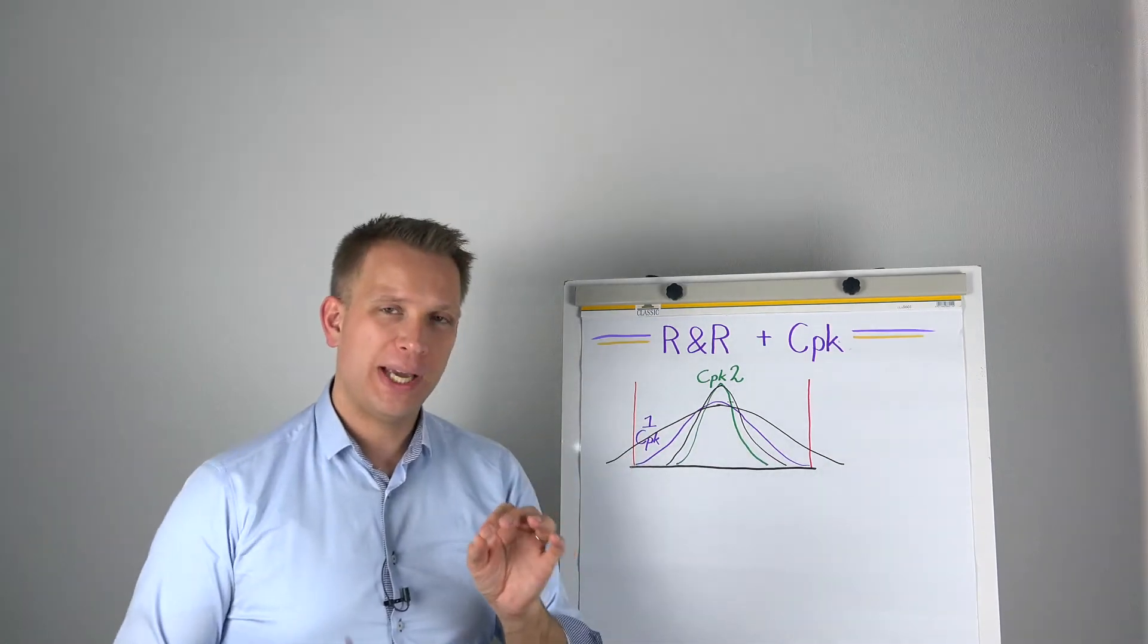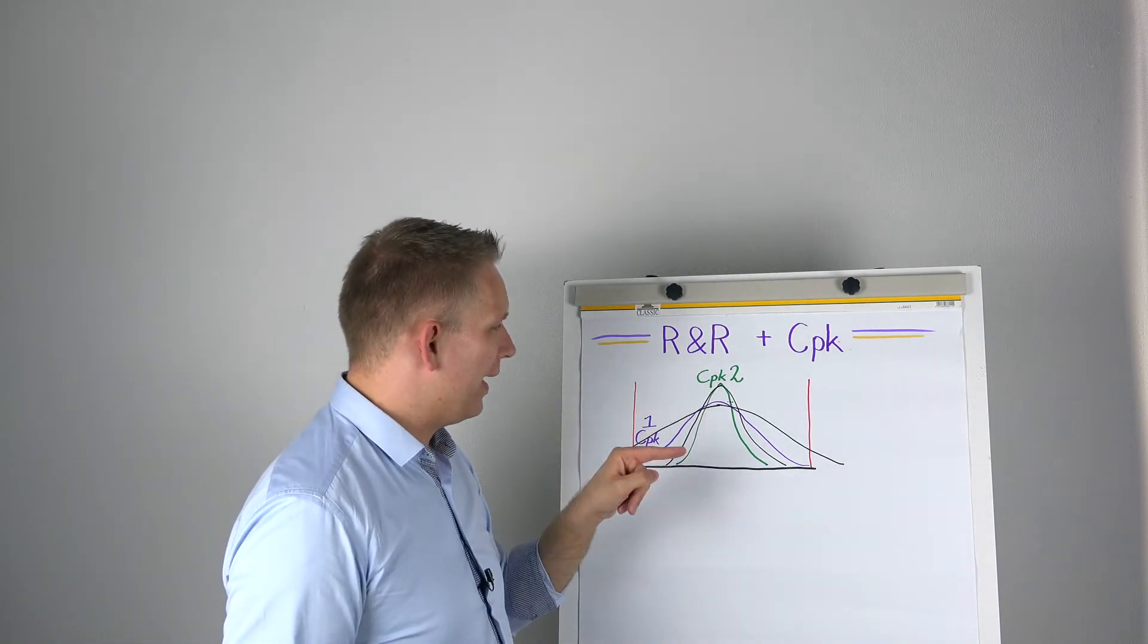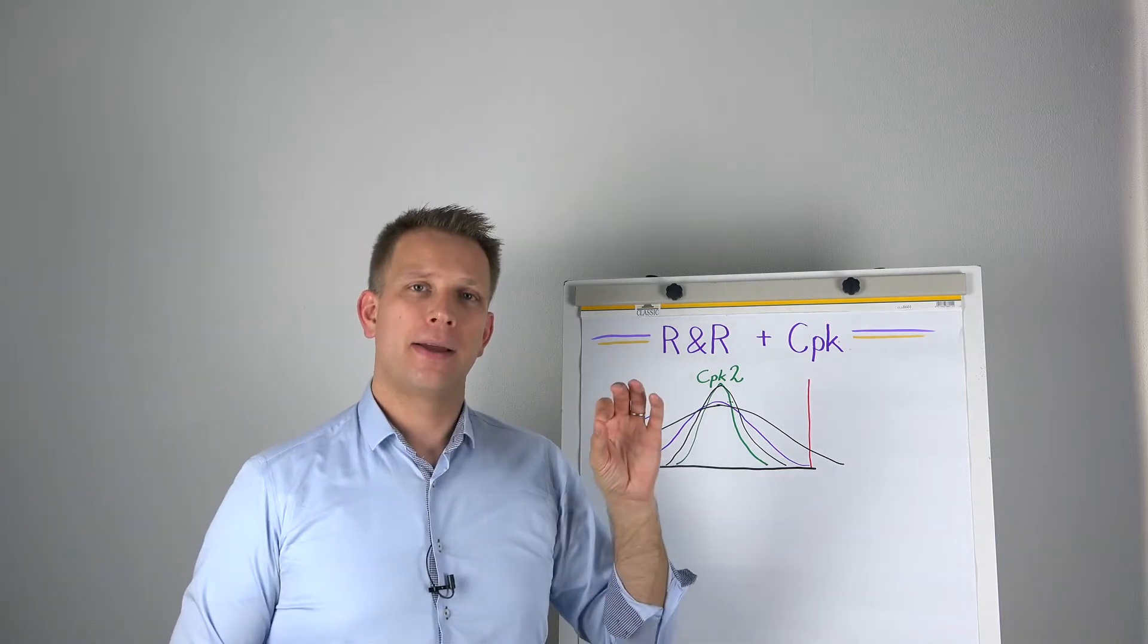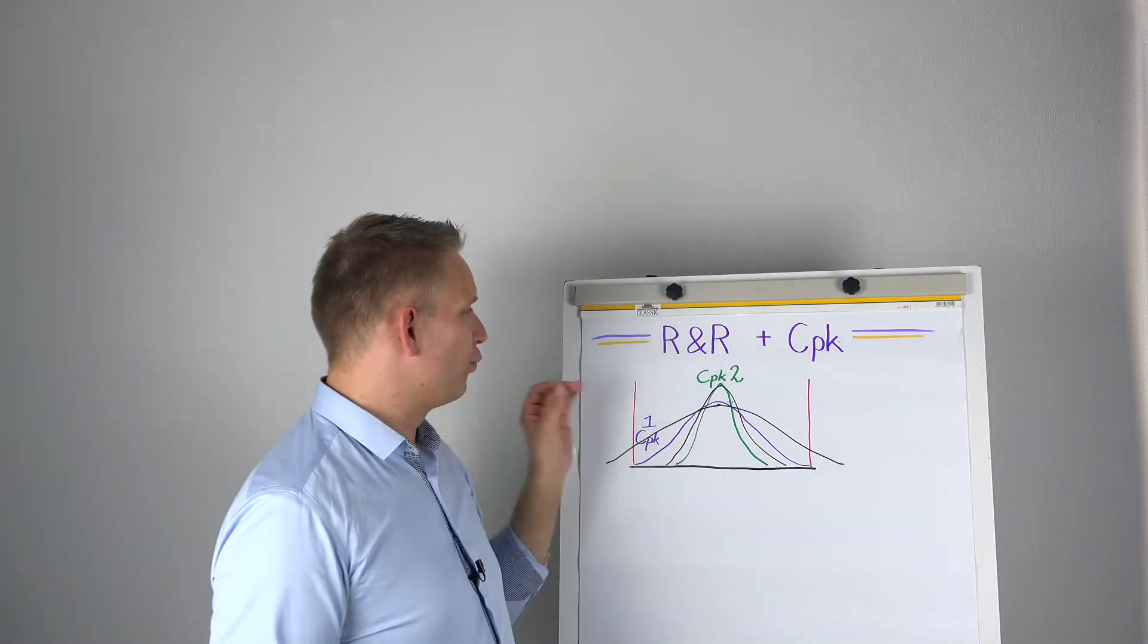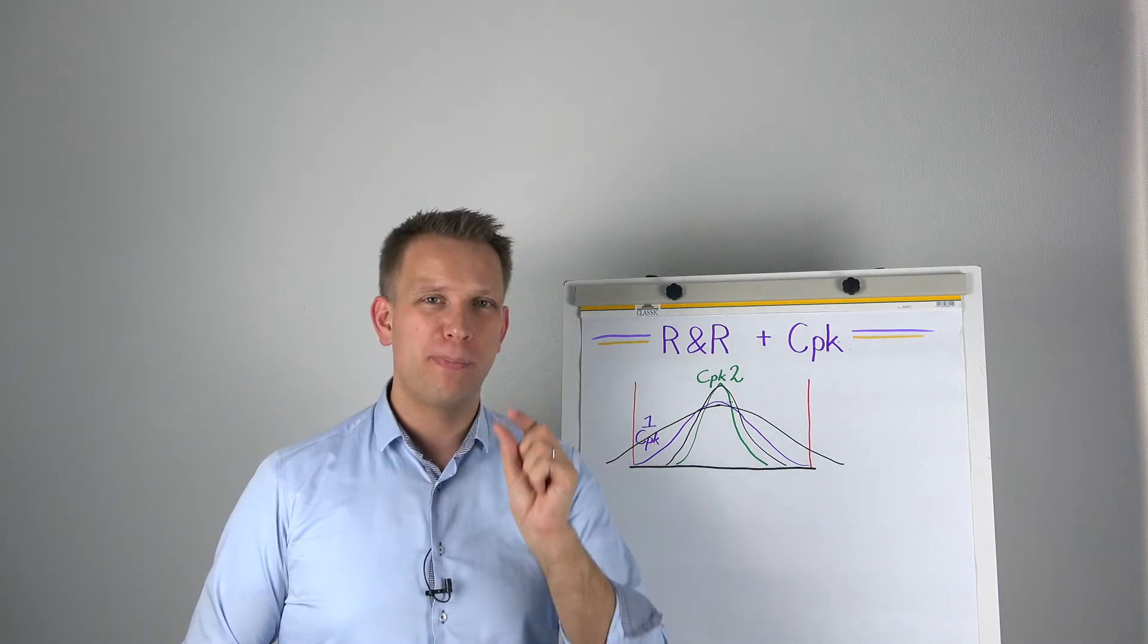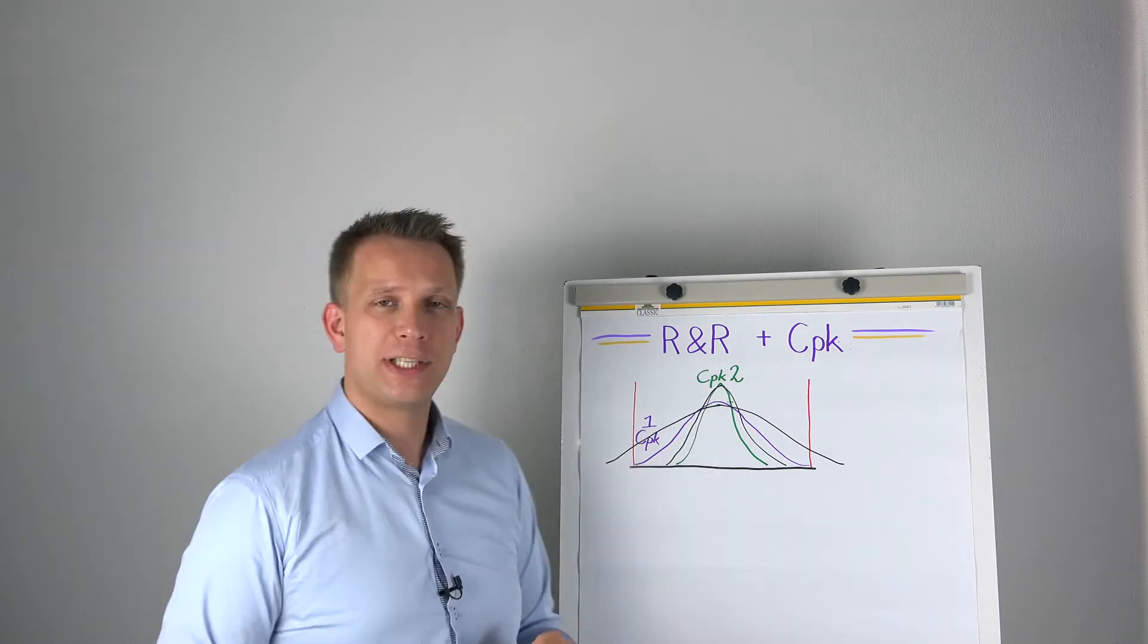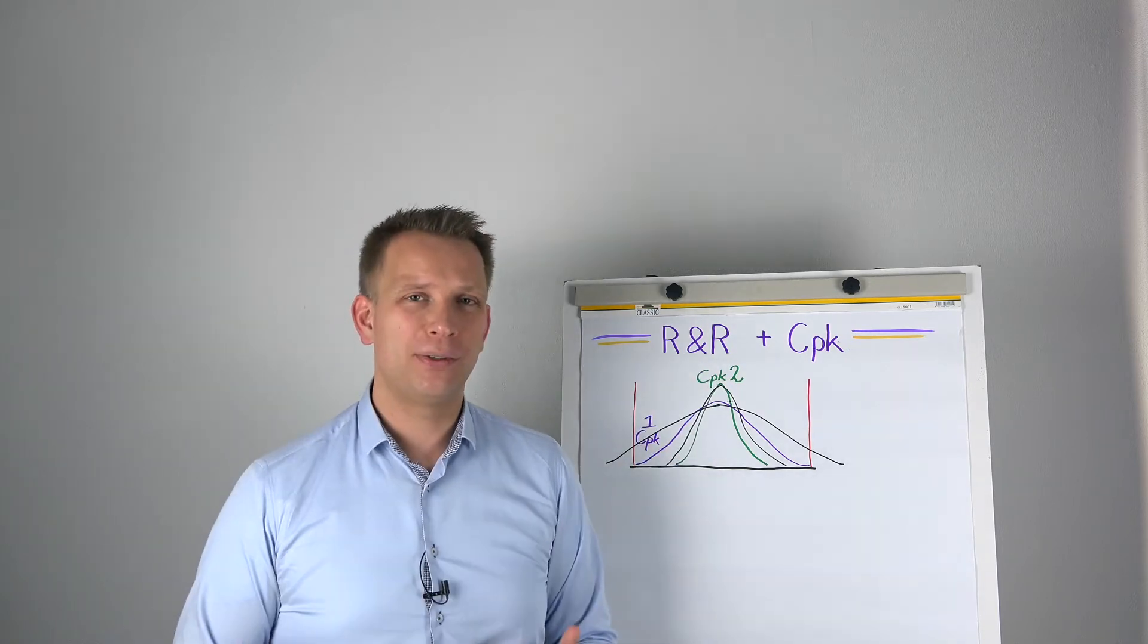So here you get your basic answer, Tom, to your question. This is why a low CPK process really needs that short, that very small bandwidth in its measuring system, and why a high CPK process can handle a bit more.